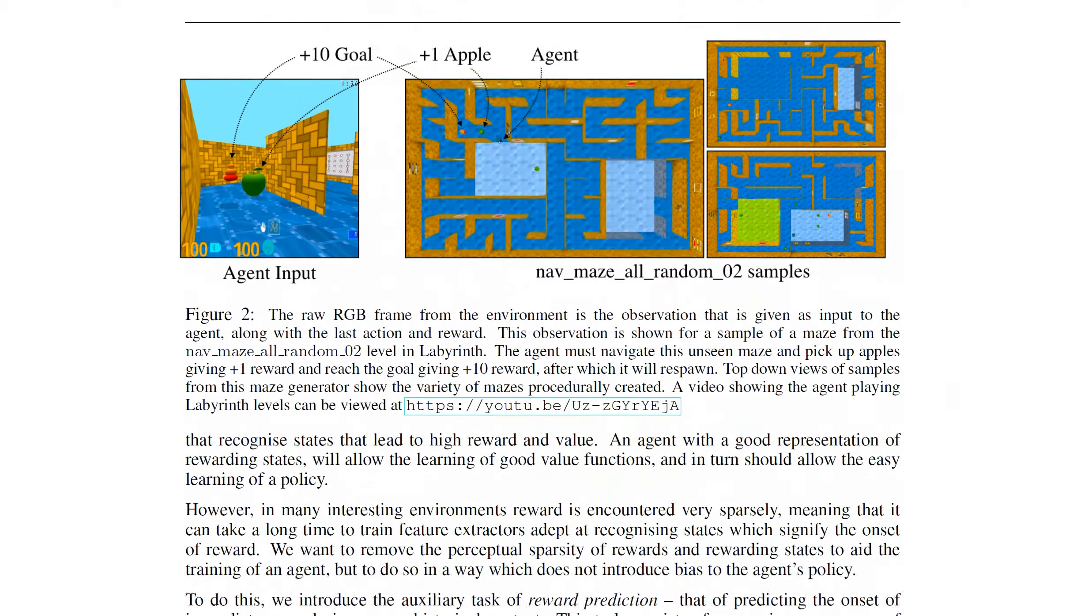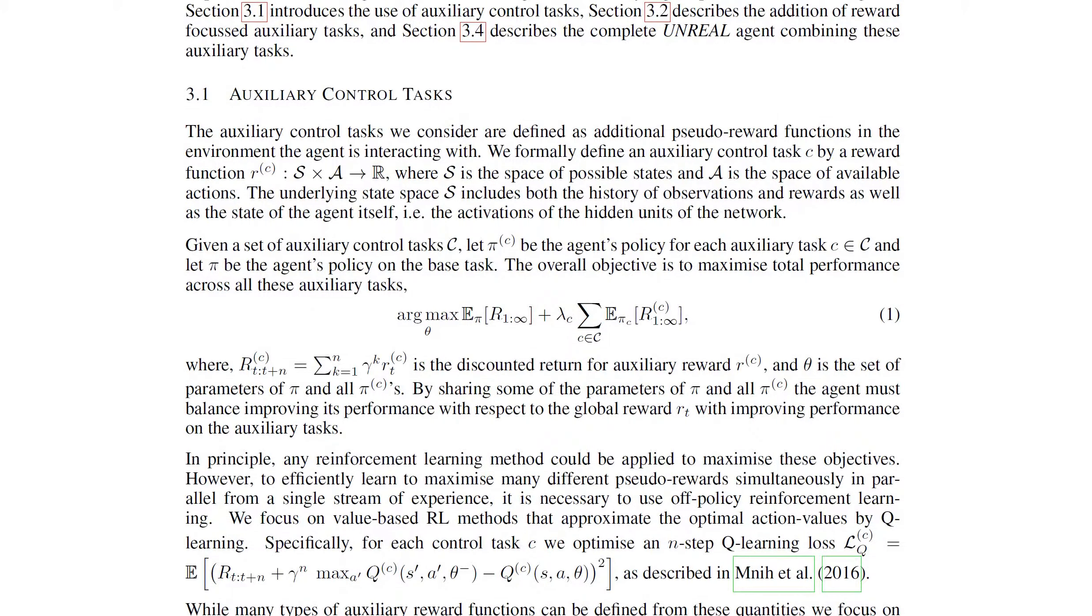What the authors propose is in addition to the regular loss that you would have - your reward - you would also have an additional set of auxiliary tasks. C goes over the auxiliary control tasks that you specify. Each of those has a reward and you're trying to maximize these each with some weight. The parameters that you maximize over control all of the different tasks, so they are partly shared between the tasks.